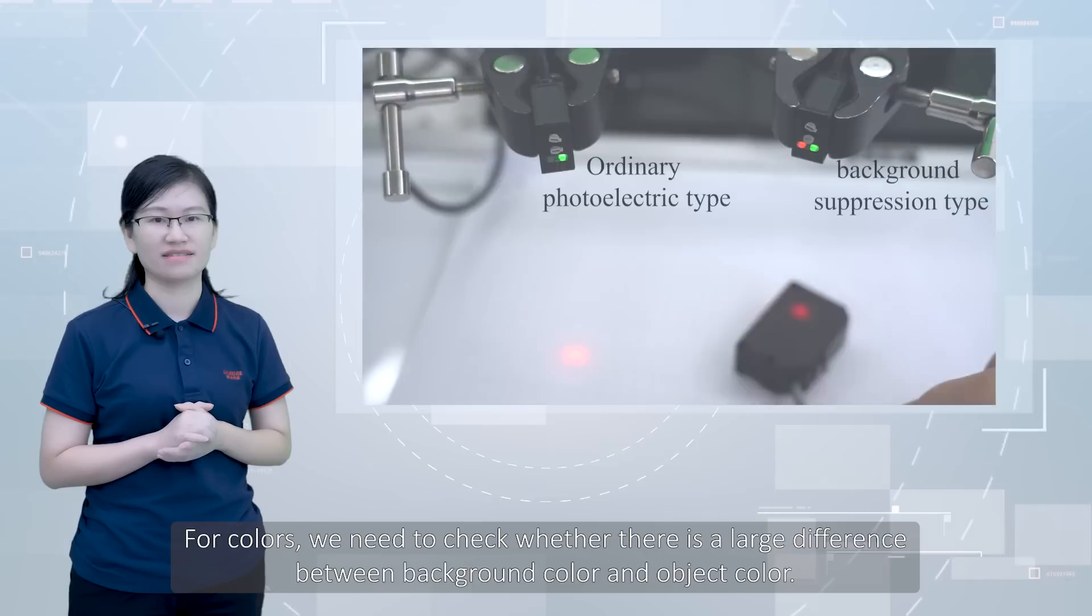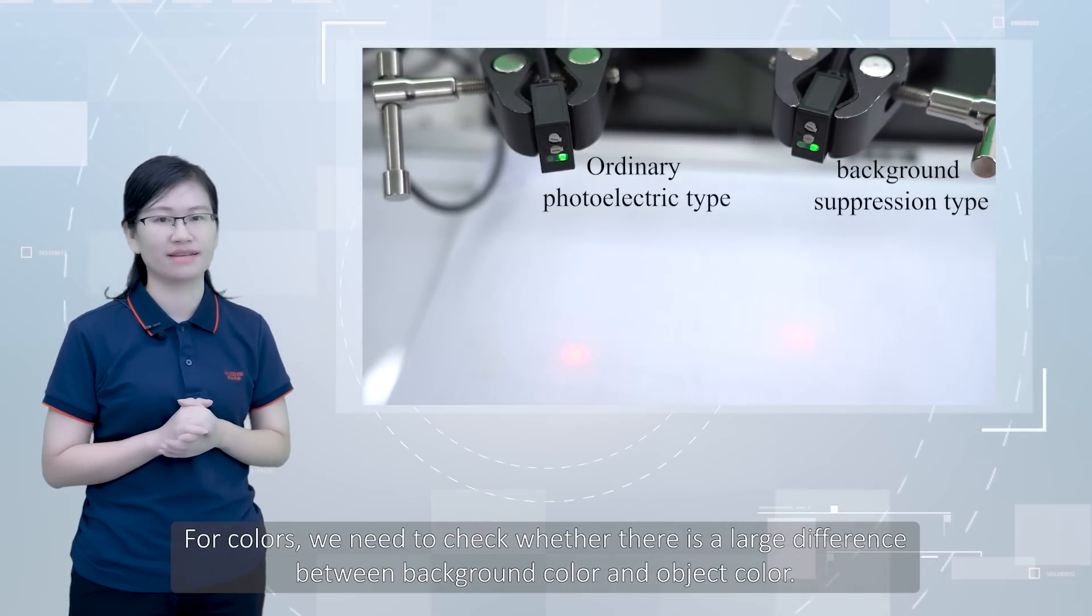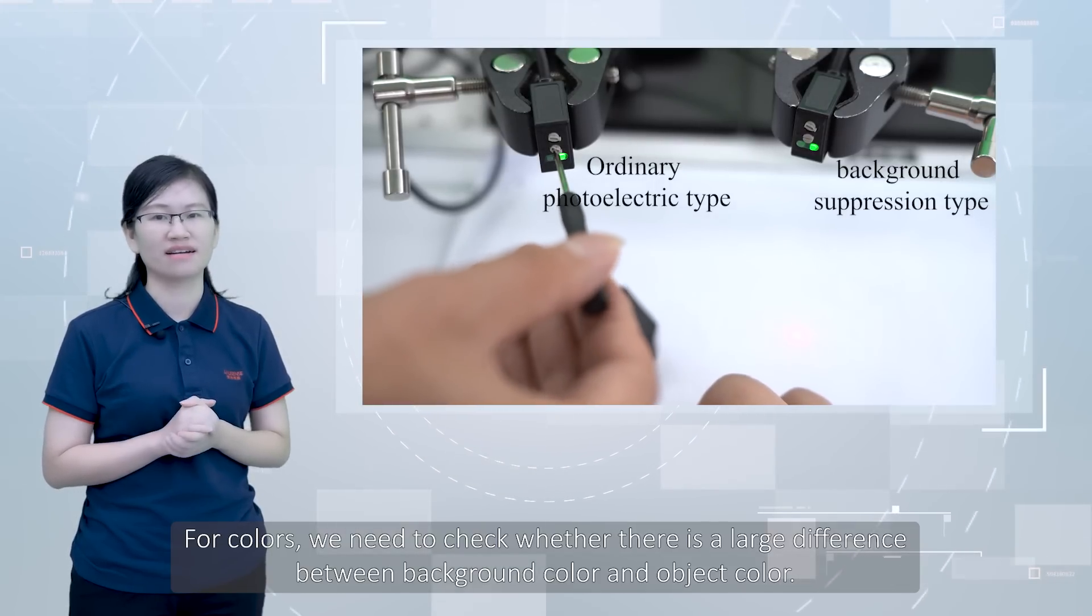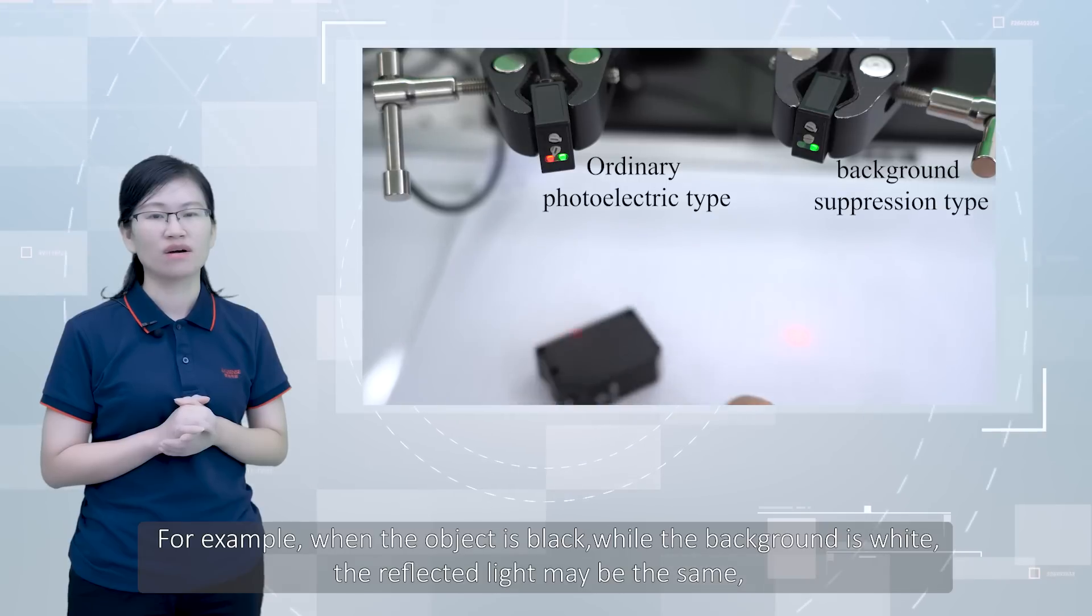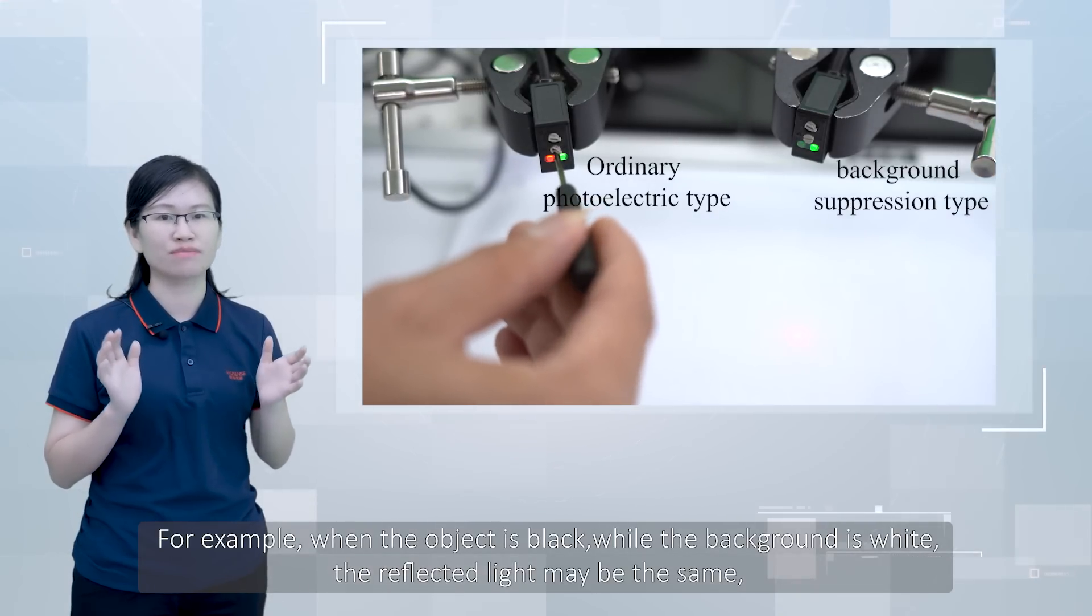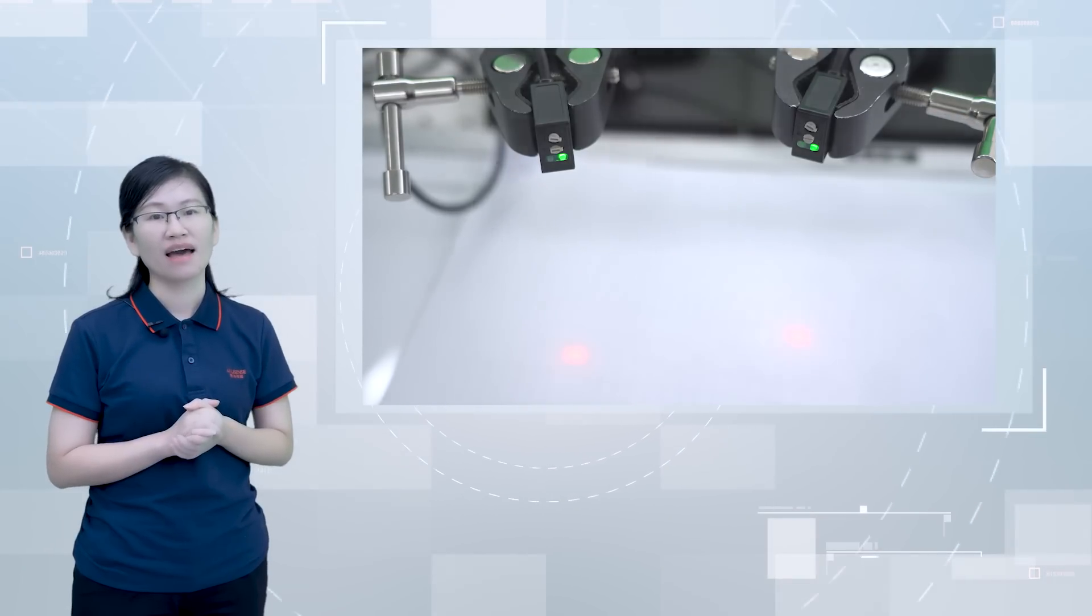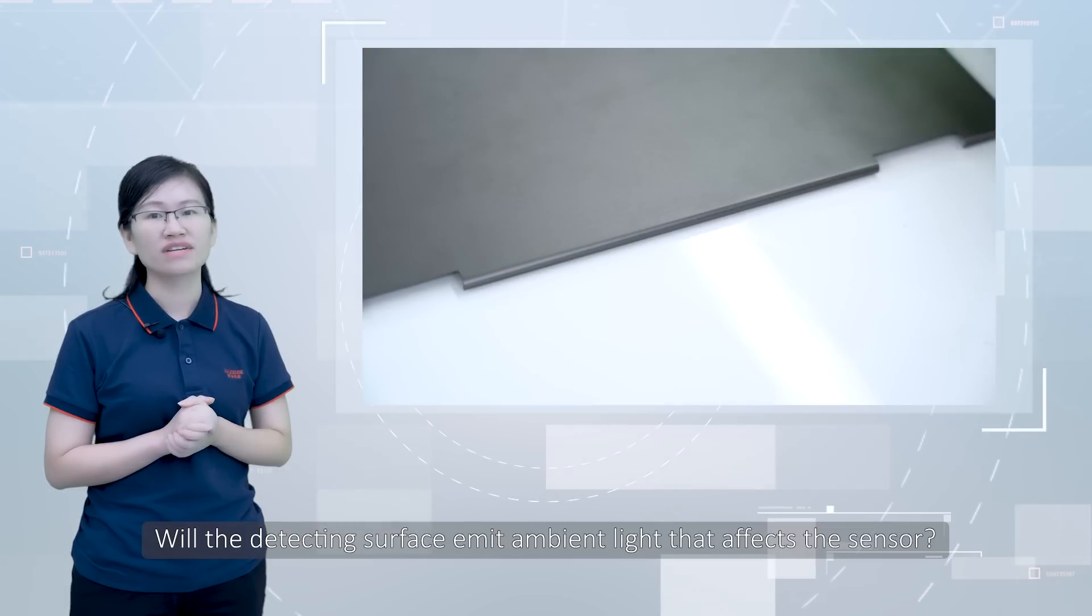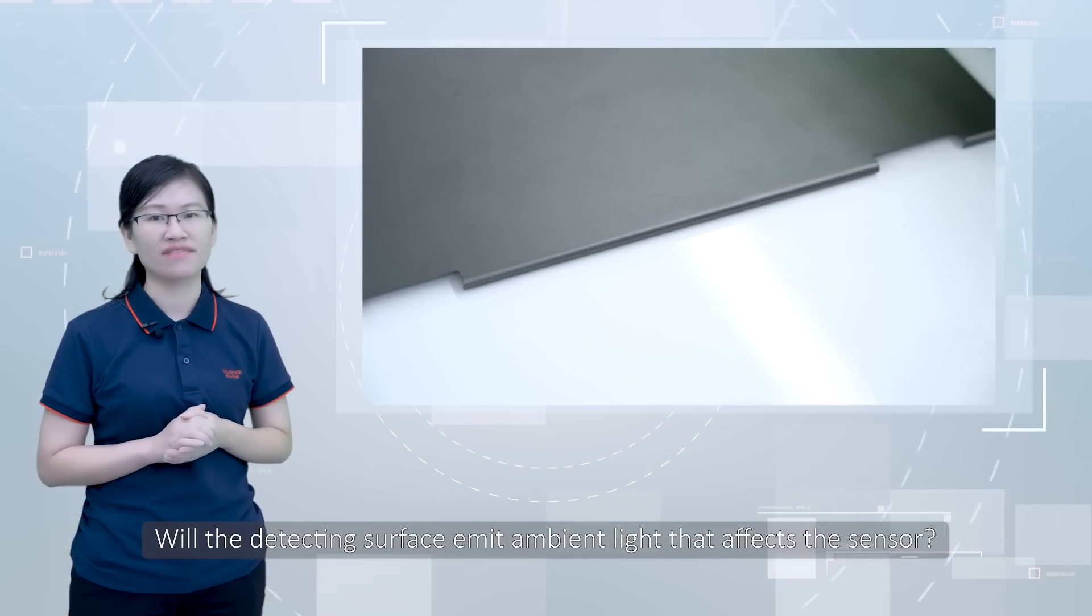For colors, we need to check whether there is a large difference between background color and the object color. For example, when the object is black, while the background is white, the reflected light may be the same. So we need to use the background suppression type. Is the background surface smooth or not, while detecting surface reflected ambient light that affects the same.